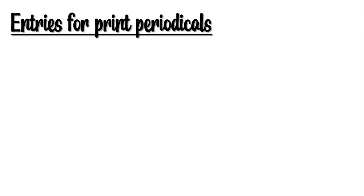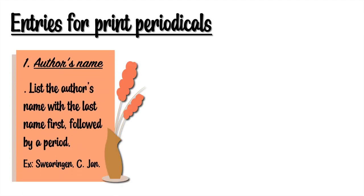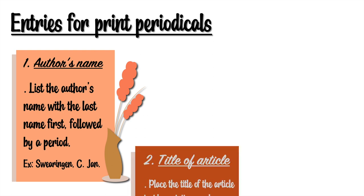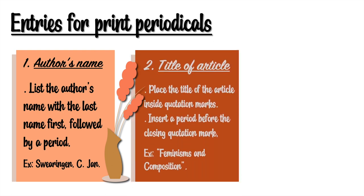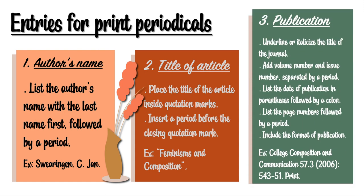Next up, entries for print periodicals. First, the author's name — list the author's name with the last name first, followed by a period. Next, the title of the article: place the title inside quotation marks and insert a period before the closing quotation mark. Example: "Feminisms and Composition."